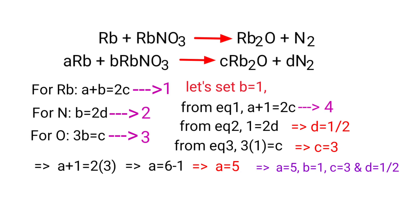Now apply the a, b, c, d values to the equation: 5Rb + RbNO₃ gives 3Rb₂O + 1/2 N₂.